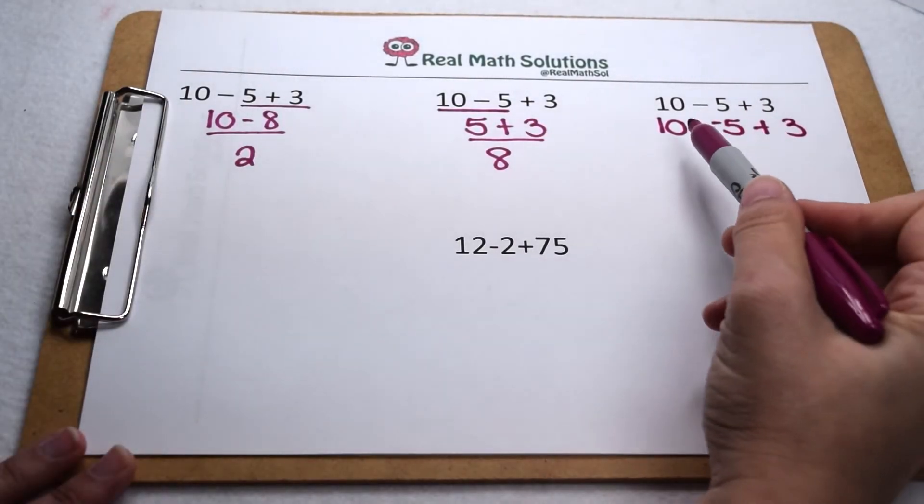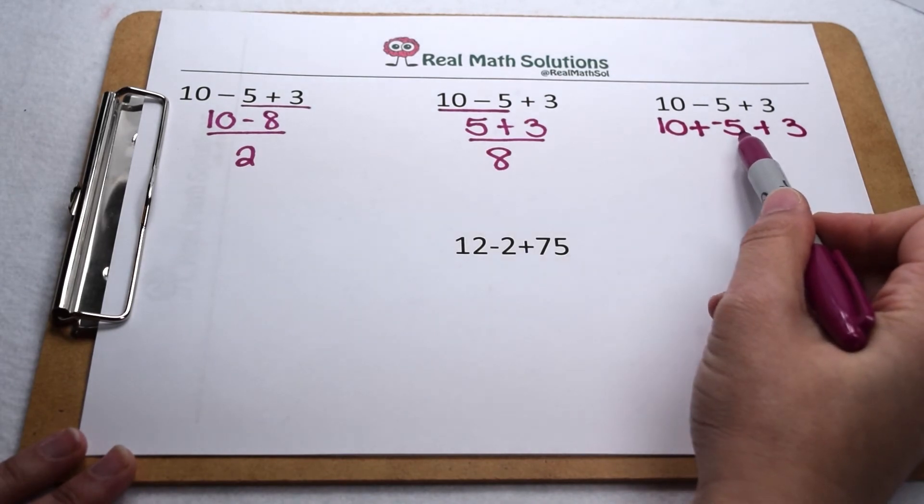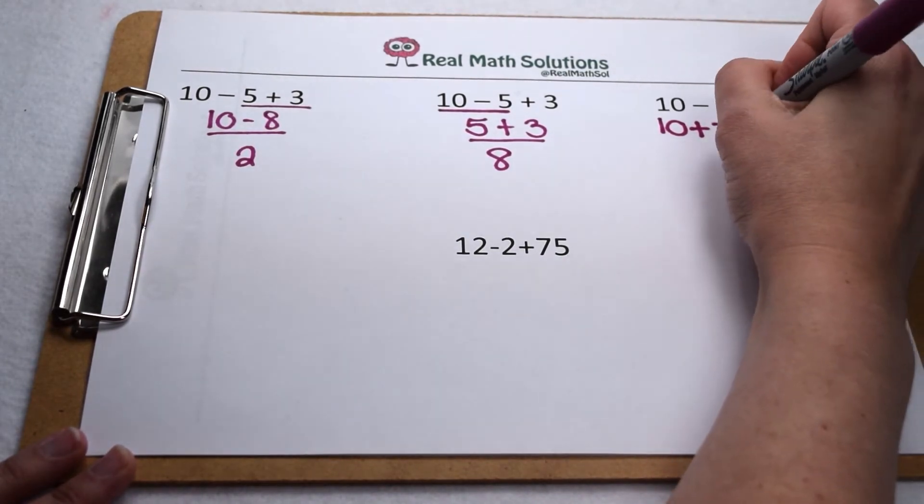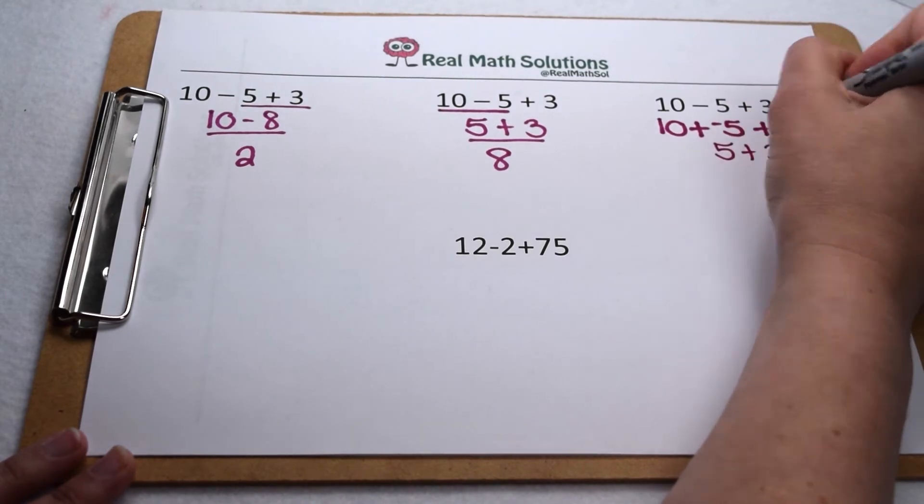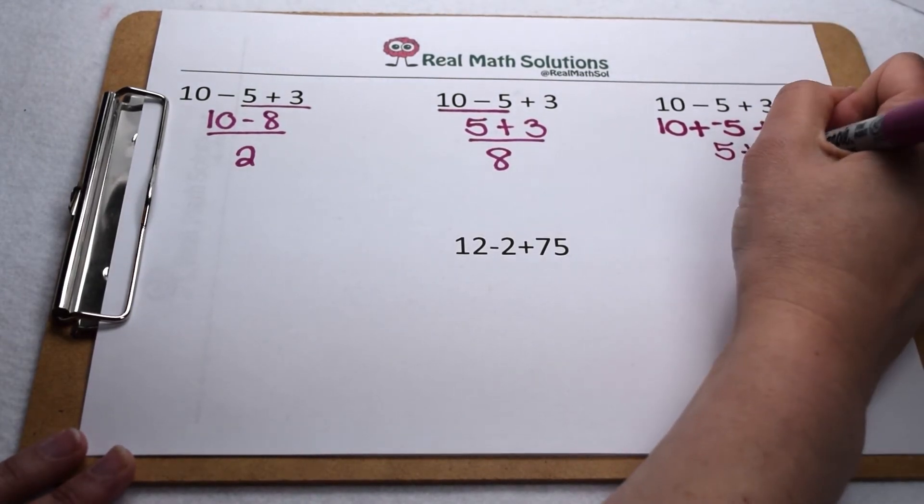So first I would have 10 plus negative 5. 10 plus negative 5 means I'm going to have 5 left, and then when I add 3 to that, 5 plus 3 gives me 8.